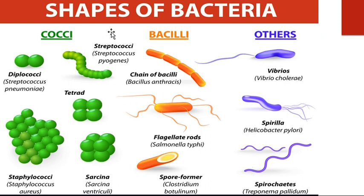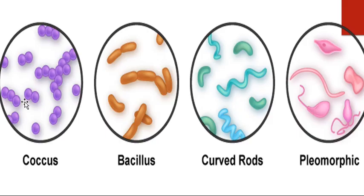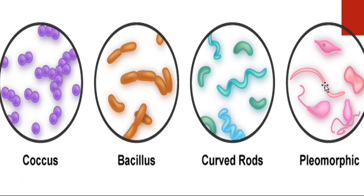These are the basic types of bacteria classified according to shape: cocci are circular, bacilli are rod-shaped, and there are curved rod bacteria as well. Then there is pleomorphic bacteria, which means there is no typical cell wall. When there is no typical cell wall, we call it pleomorphic. An example is Mycoplasma pneumoniae, which has no typical cell wall.